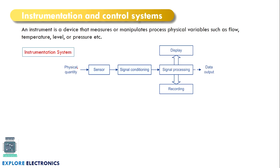That measurement system will generally have a sensor. This sensor is going to sense the physical quantity — temperature, level of liquid, pressure, speed, flow of liquid — these will be called as physical quantities. This physical quantity will be measured by a sensor. The sensor is going to give some analog output, and this analog output will be given to signal conditioning, which manipulates the signal into the kind we require for our output.